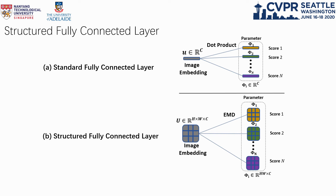The structured FC layer is an extension of the standard fully connected layer, in that it replaces the dot product operations between vectors with the EMD function between vector sets, such that the structured FC layer can directly classify feature maps.